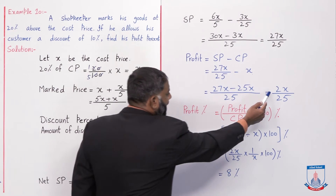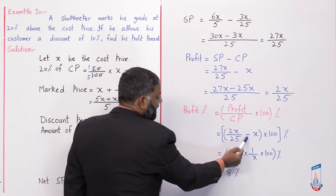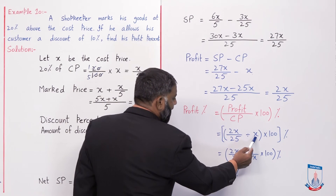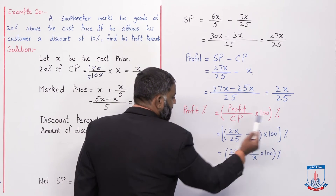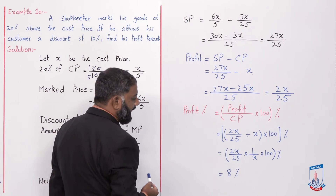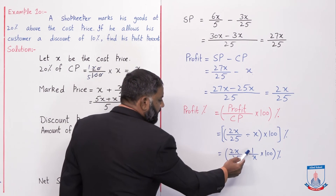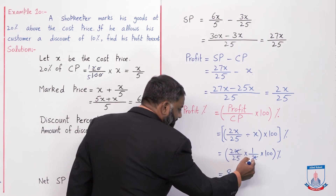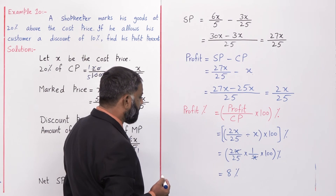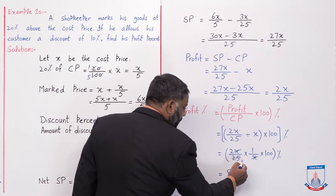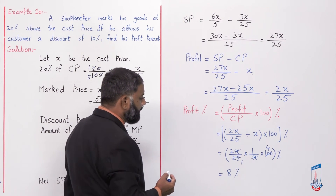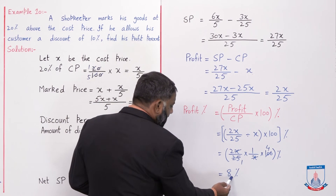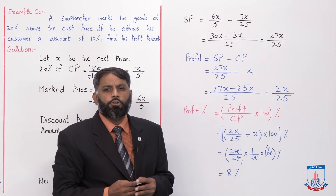Profit% = Profit ÷ Cost Price × 100% = (2x/25) ÷ x × 100%۔ Divide کو multiply میں change کریں: reciprocal of x = 1/x۔ = 2x/25 × 1/x × 100۔ x cancel هو گيا، پھر 25 اور 100 میں cutting: 100/25 = 4۔ = 2 × 4 = 8%۔ تو Profit Percentage = 8%۔